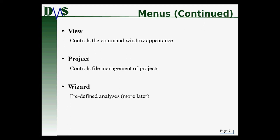The view menu controls the command window appearance — things like font color, font size, and whether you see a background image. The project menu controls the file management of projects and will be pretty handy — we'll talk about that in this tutorial. Finally, you have the wizard menu, which contains any predefined analyses or predefined pieces of code. That's something we'll talk about much later, around the 900 series.